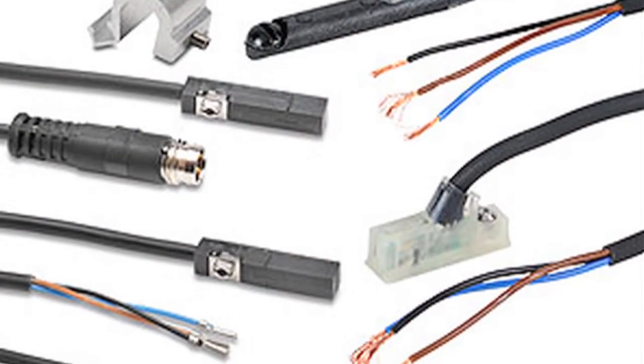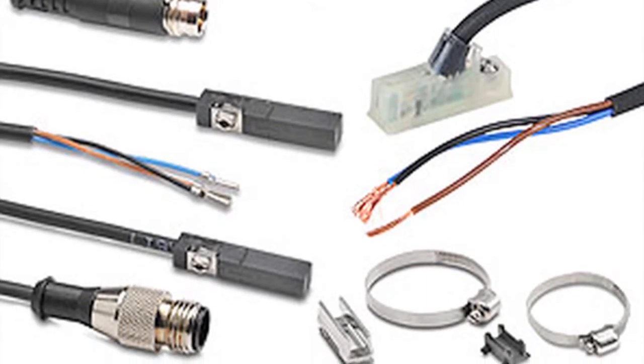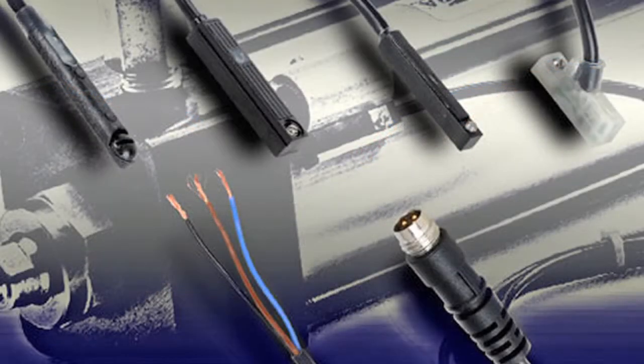The Nitra line now includes nine different styles of position switches for pneumatic cylinders. Mounting bands with adapters for round-body cylinders are available, ranging from one-eighth to one-quarter inch sizes.